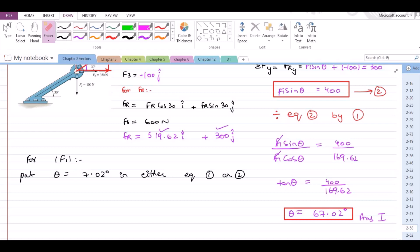So let us consider equation 2. From here we have F1 equals 400 over sin 67.02. So from here we have F1 equals 434.48 newtons. Now this is our second answer.